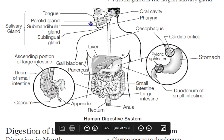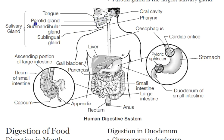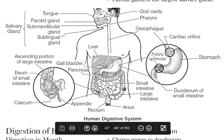The diagram shows: the mouth with tongue, salivary glands (parotid, submandibular, and sublingual glands), oral cavity, esophagus (the tube through which food passes), stomach, small intestine, large intestine, and rectum.